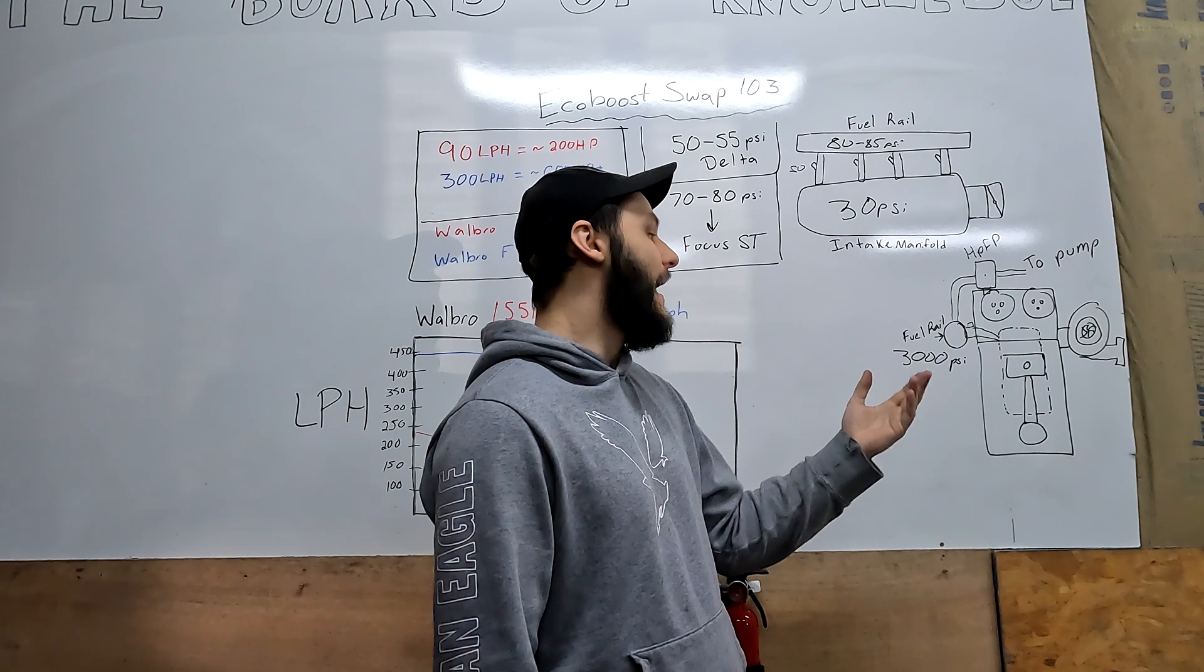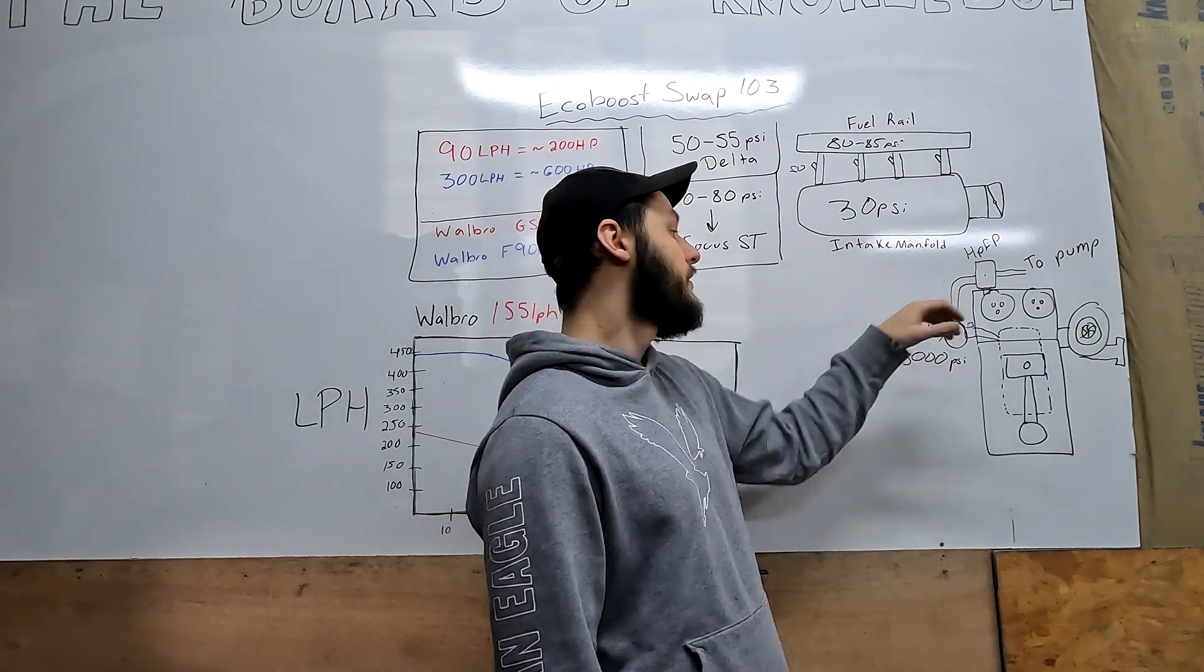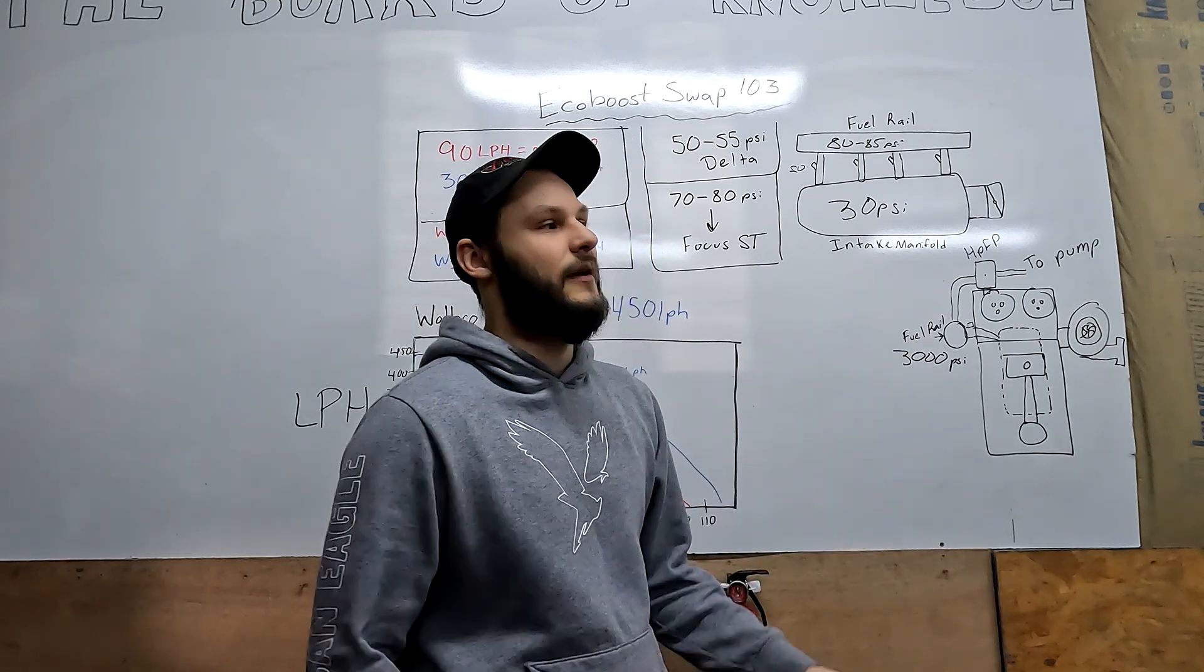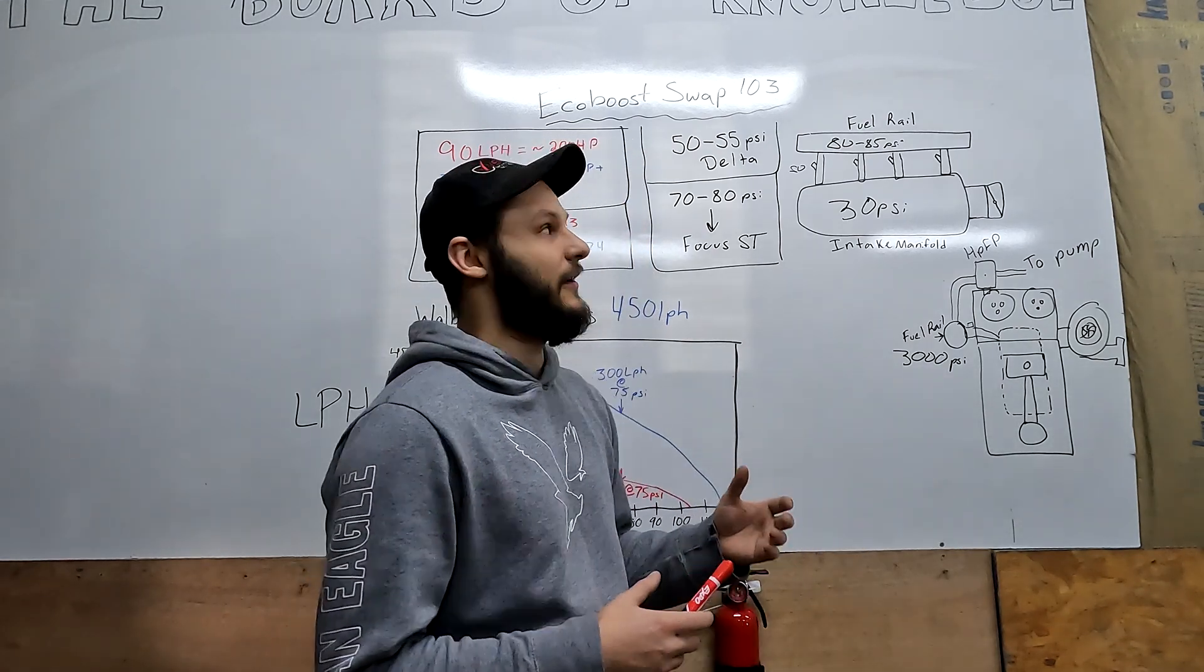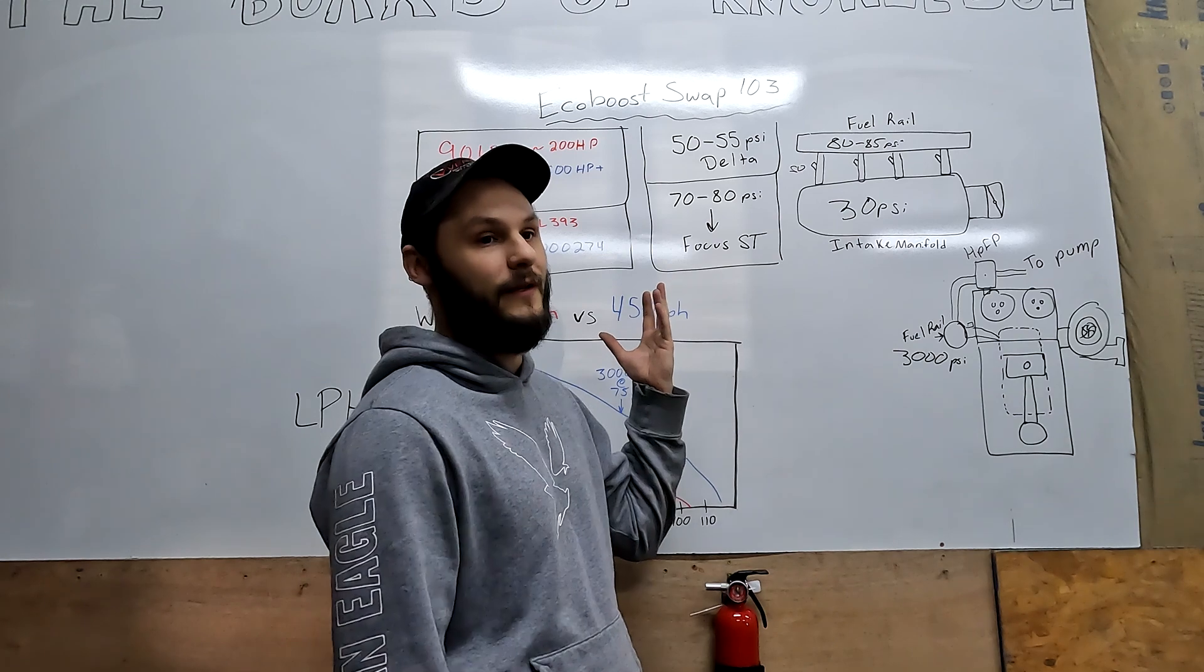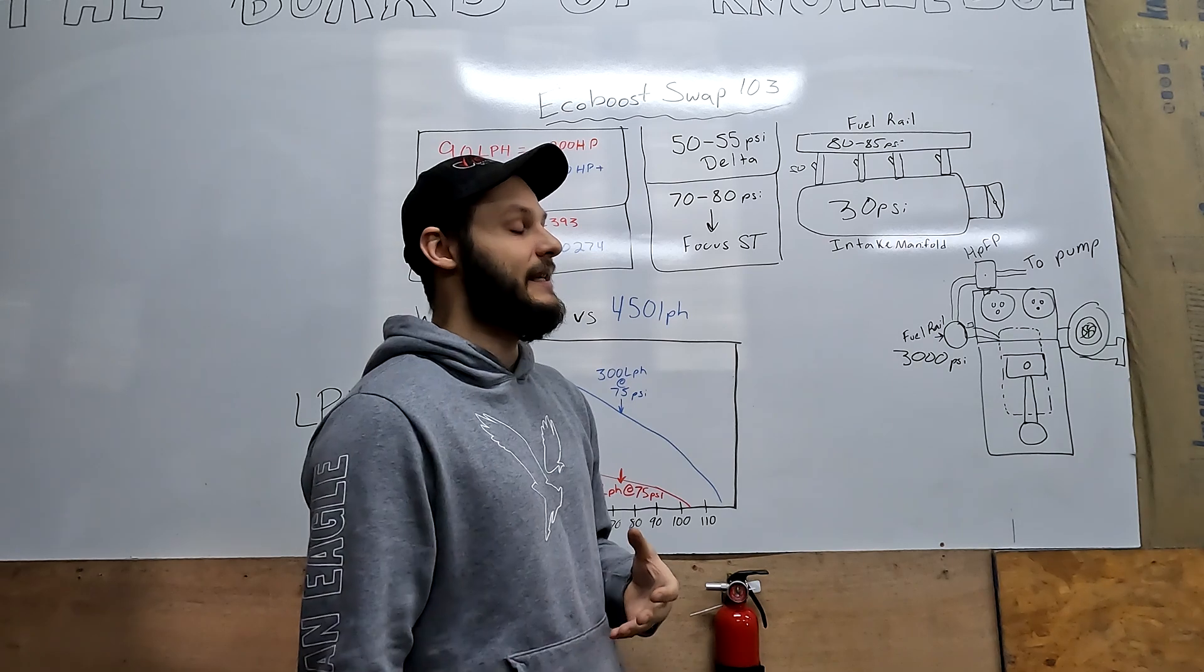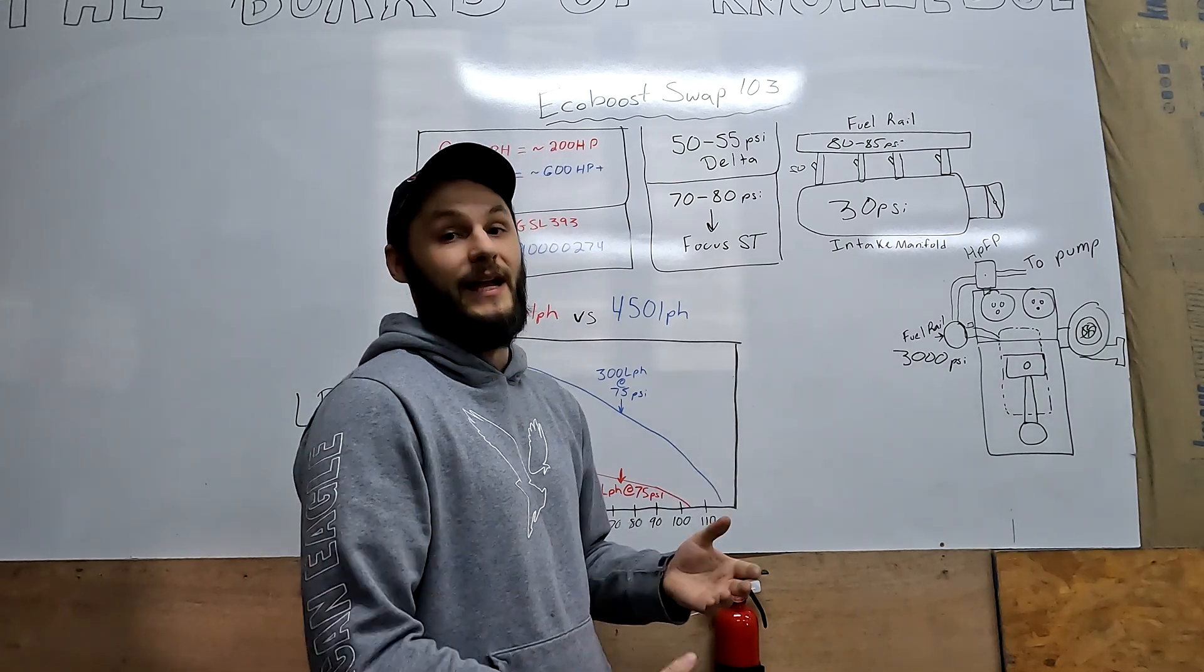The issue here is we can't really maintain a delta of 50 to 55 psi across such a large pressure here. Our cylinder pressures are going to be massive, so our high pressure fuel pump boosts the fuel pressure up to as much as 3000 psi.